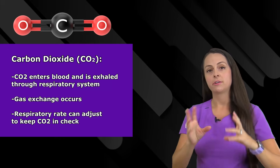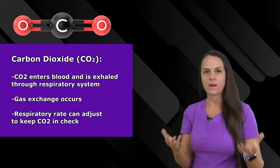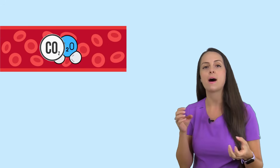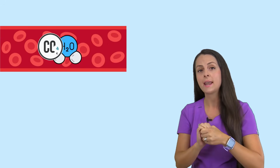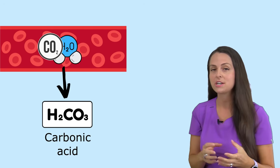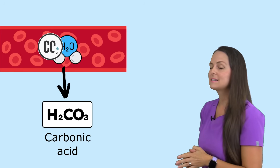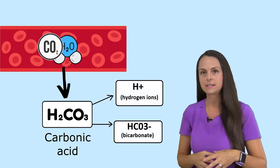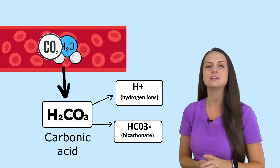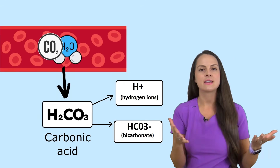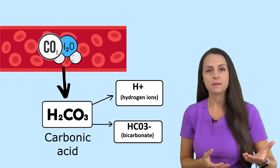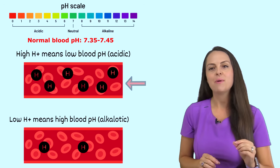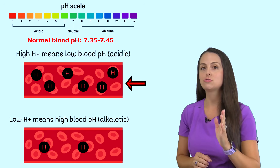When CO2 is created from cell metabolism, it's that waste product. Your body dumps it into the blood. When CO2 enters the blood, it finds water molecules and binds with water — CO2 and H2O bind together. When they bind together, we get the creation of carbonic acid. Carbonic acid is a very weak acid; it doesn't stay together long, so it breaks apart into hydrogen ions and bicarb. The hydrogen ions really affect our blood pH, because when we measure blood pH we're measuring the concentration of hydrogen ions, and hydrogen ions are acidic. Too many hydrogen ions will drop your blood pH.